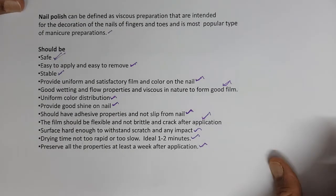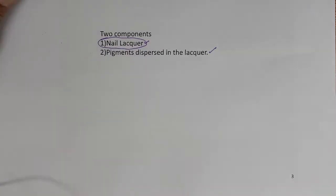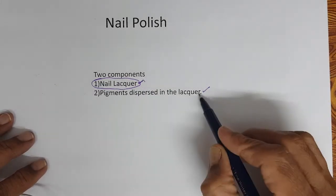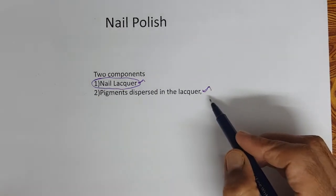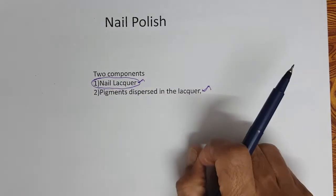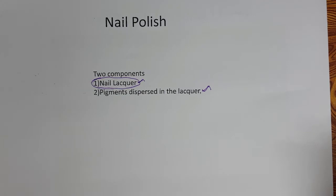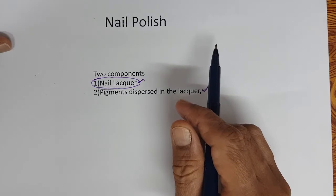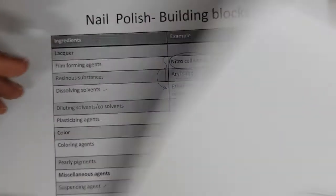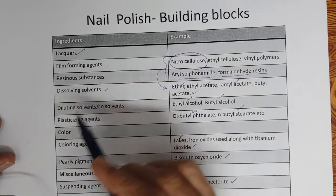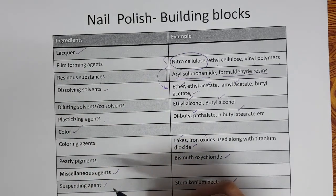The product should preserve all its properties for at least a week after application. These are the ideal characteristics of nail polish. A nail polish formula has two components: nail lacquer and pigments dispersed in the lacquer. The building blocks of nail polish consist of three components: lacquer, color, and miscellaneous agents.